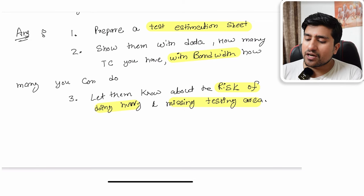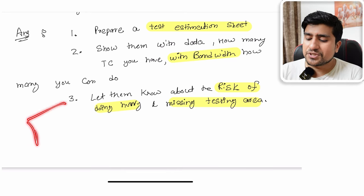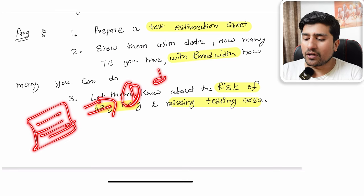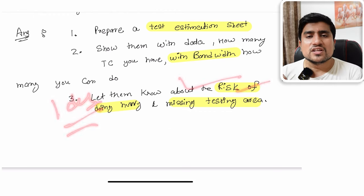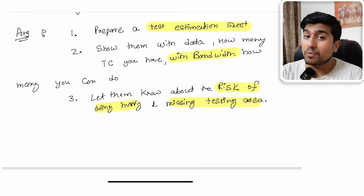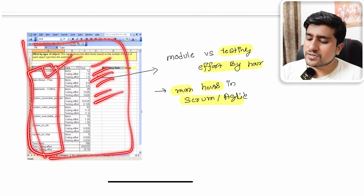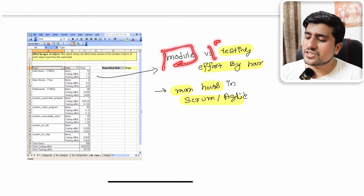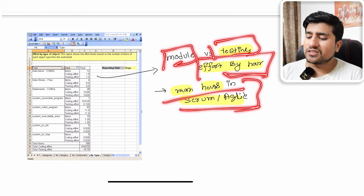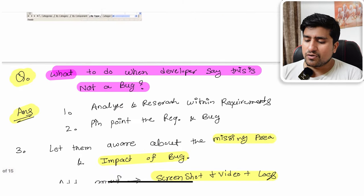It is your responsibility as a QA to divide your modules priority-wise and start executing. For a one-day timeline, present the test estimation sheet showing whether the task is achievable and what risks are involved. The estimation sheet will have modules listed along with the testing effort in hours — 'man-hours' versus scrum story points. In Scrum and Agile environments, these are the terms you will use.